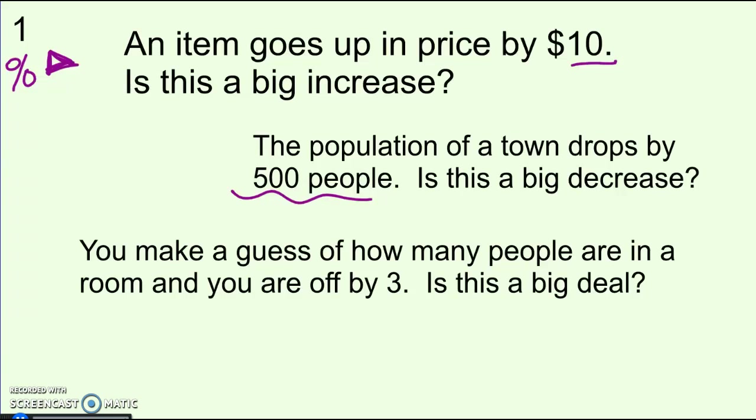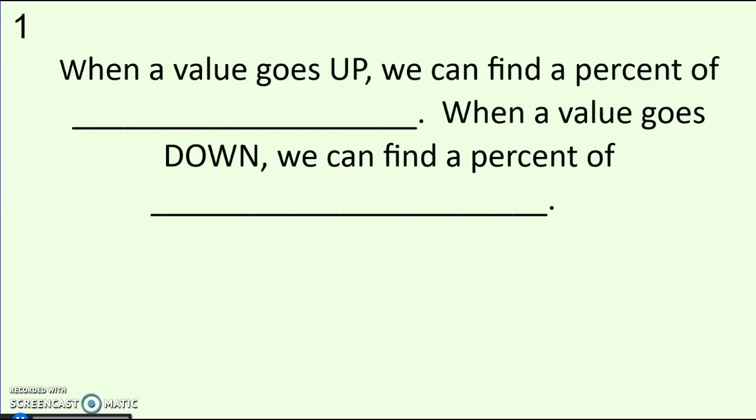Same thing for percent error. If you were counting how many people and you were off by three, it matters whether there were only five people in the room or 500 people. So in all of these cases, it really matters what you have to start with. That's why we don't just say there was an increase or decrease — we turn it into a percent increase or decrease. When a value goes up, we find a percent of increase; when it goes down, we find a percent of decrease.